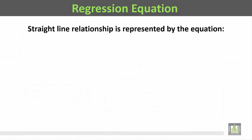Regression equation: the straight line relationship is represented by the equation y-hat is equal to a plus bx. معادلة الانحدار الخطي هي y-hat — والـ hat هي القبعة فوق الـ y — تساوي a وهو ثابت زايد b وهو ثابت آخر مضروباً في x.